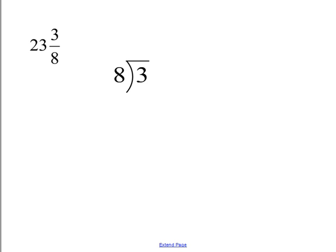In the next example, we have a mixed number, 23 and 3 eighths. We know it's going to be 23 point something, so it's not necessary to work with the 23. I just need to change the 3 eighths to a decimal.